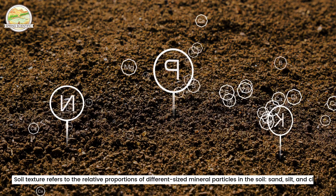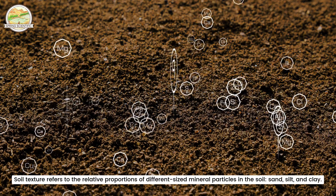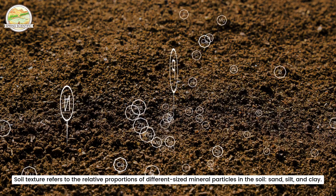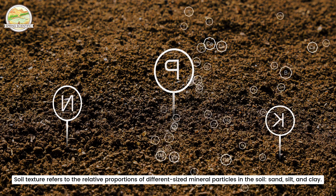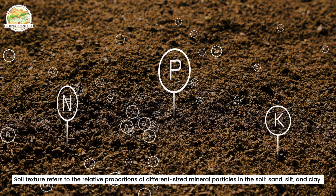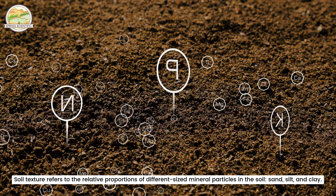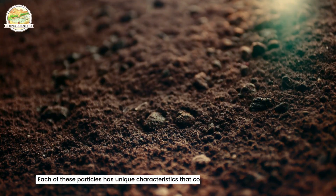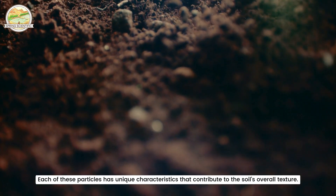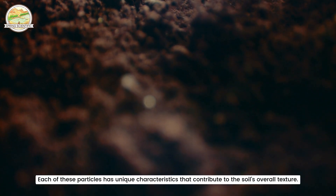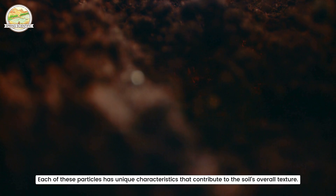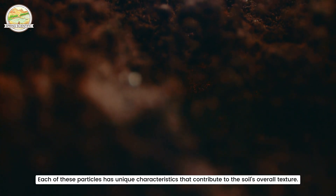Soil texture refers to the relative proportions of different sized mineral particles in the soil: sand, silt, and clay. Each of these particles has unique characteristics that contribute to the soil's overall texture.